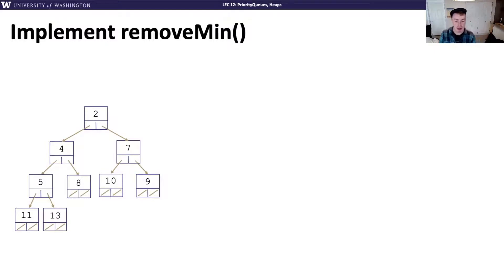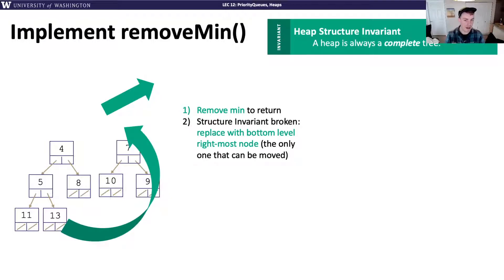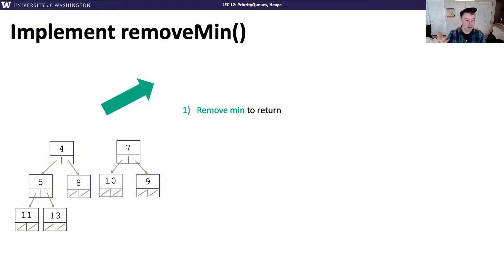How might I actually go about implementing removeMin? Just like peek, the value we want to remove, that 2, is at the top. We could say, I want to remove the minimum value, I'll return that in a second, but we've now caused a problem if we just took out that node. We don't have a tree anymore. We have this kind of weird two subtrees. We need some way to fix that.